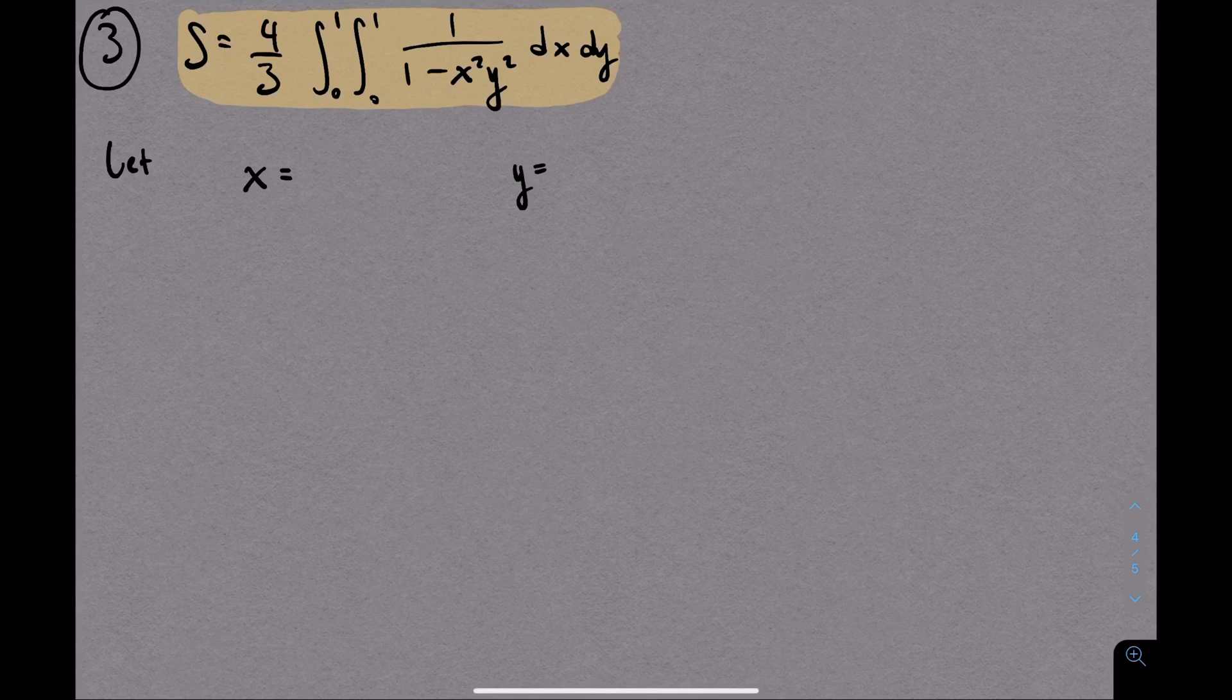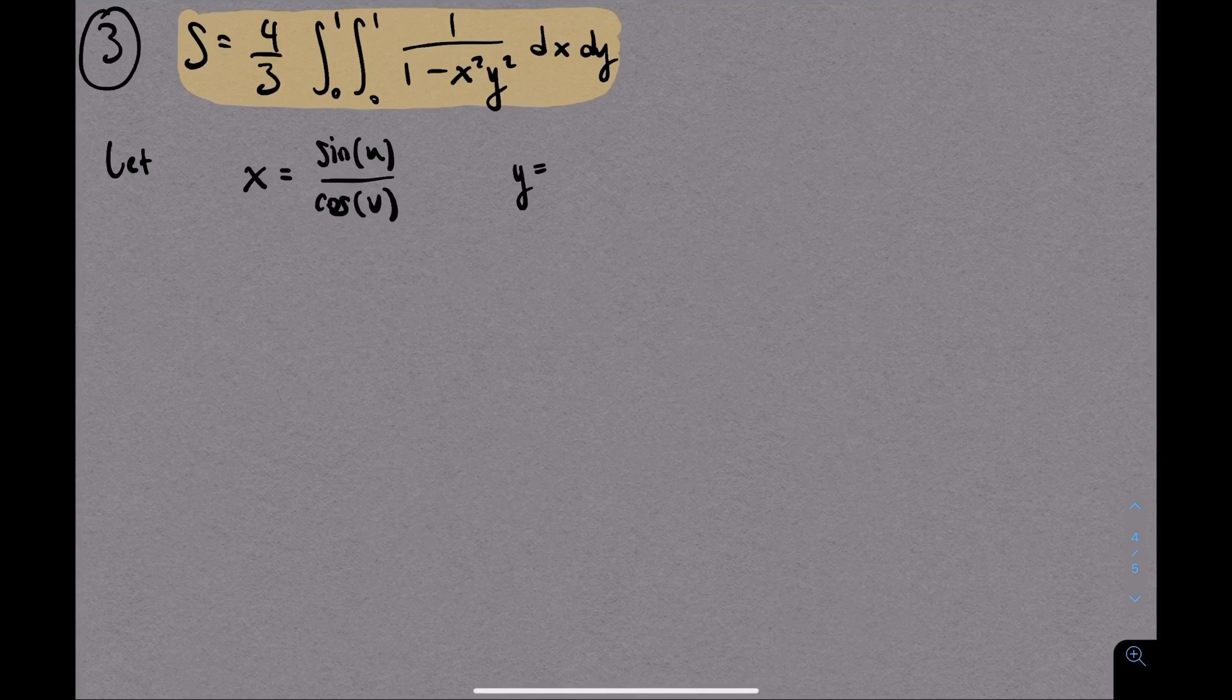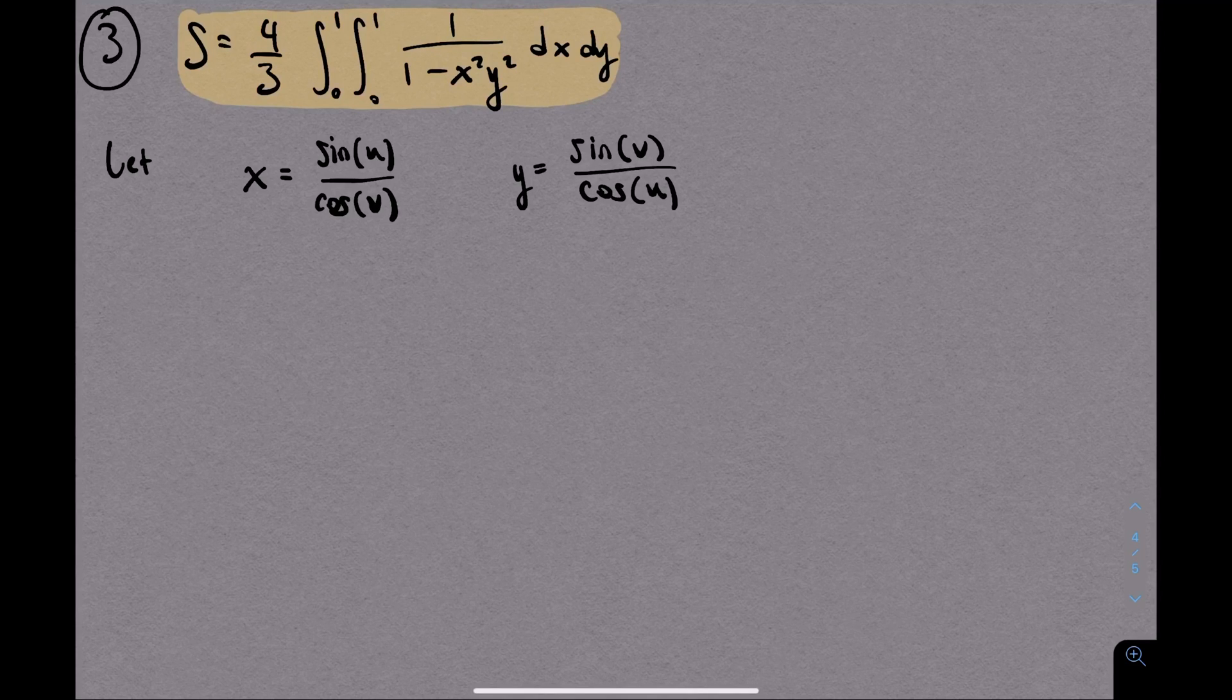So we need to call x something, and we need to call y something. And if you want, you can pause the video to see if you can come up with the substitution. But I'll tell you now that it does come from left field. It's unlike anything you've probably seen before. So what is it? We're going to call x sine of u over cosine of v, and y sine of v over cosine of u. This is wild, and you'll see in a second how effective this is.